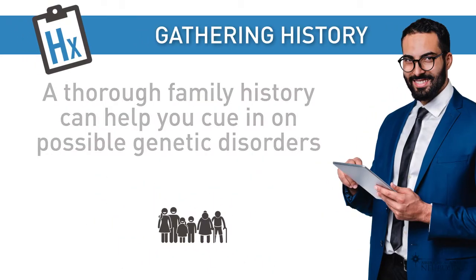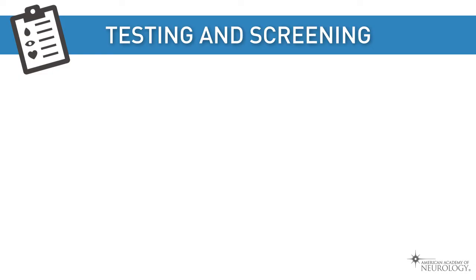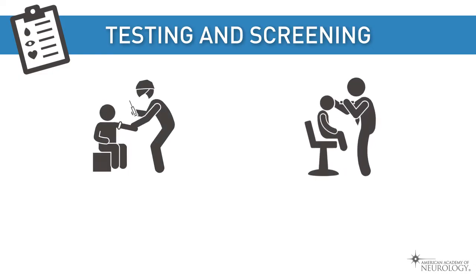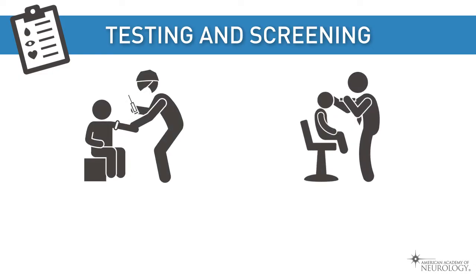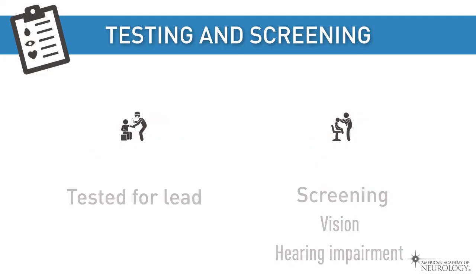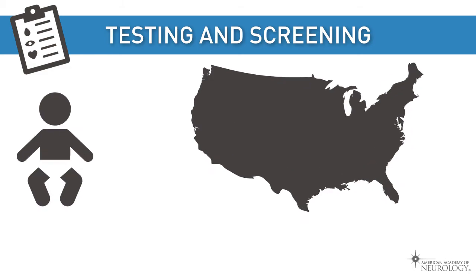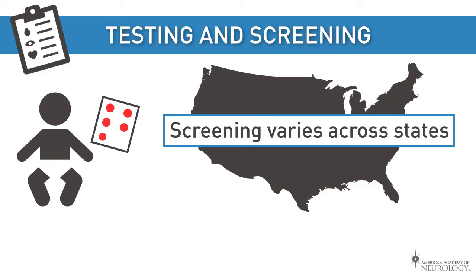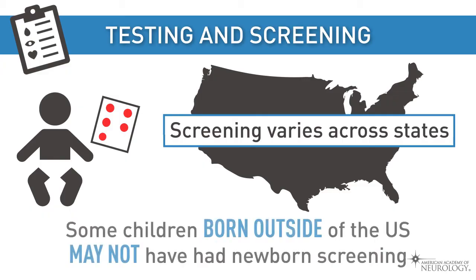Another important consideration when assessing a child with a possible developmental delay is to ask whether the child has been tested for lead and screened for vision and hearing impairment. All states conduct newborn screening for certain metabolic diseases, though screening varies across states, and some children born outside of the U.S. may not have had newborn screening.